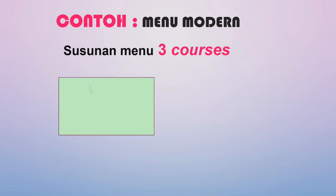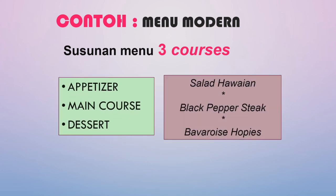Berikut ini contoh menu modern yang lebih sederhana lagi, dari 6 menuju ke 3 cours. Tiga cours tersebut adalah appetizer, main course, and dessert. Untuk appetizer contohnya adalah salad Hawaiian, main course-nya ada black pepper steak, dan dessert-nya contohnya adalah strawberry crepes.